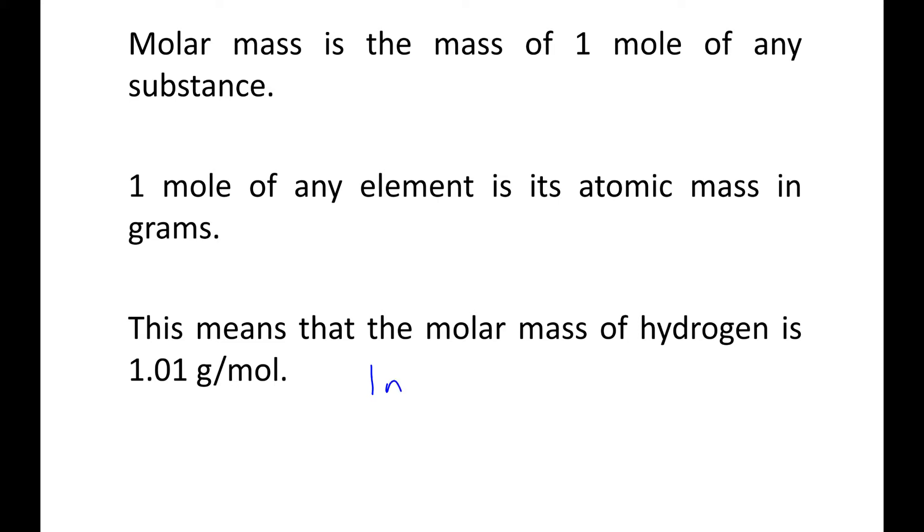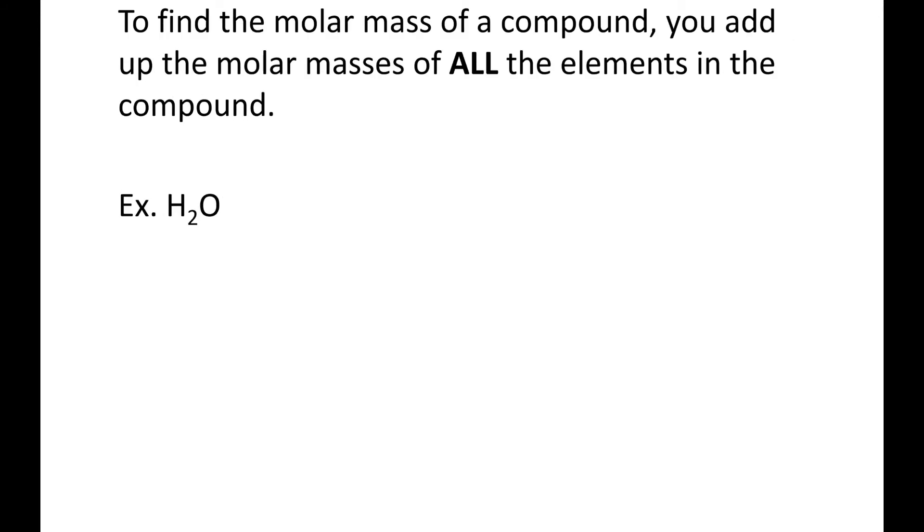So in other words, one mole of hydrogen has a mass of 1.01 grams. We can use this for conversion factors with the next set of notes. We're going to be converting from moles to mass and mass to moles, and we need to know how many grams are in one mole of that particular substance. Now, to find the molar mass of a compound, you add up the molar masses of all the elements in that compound.